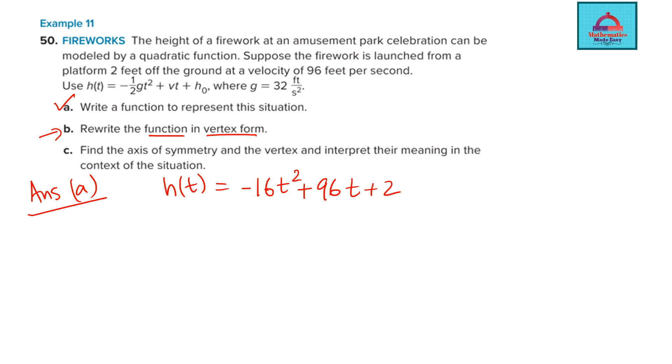So this is what we get. Now let's see how we convert this by grouping and by factoring. So here we first take these two brackets, these two terms, combine them and take the negative sign outside. So I can take negative 16 outside. So what is left inside? t square minus 6t. And plus 2. Is this fine?